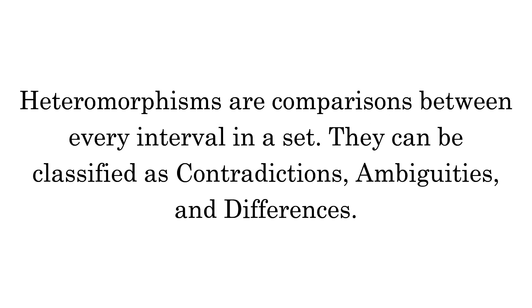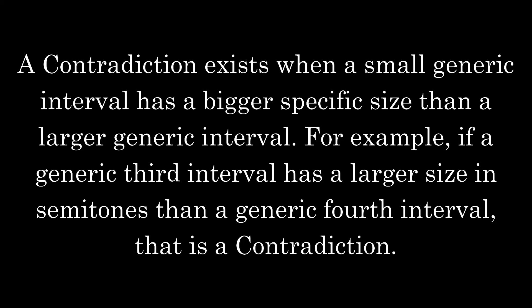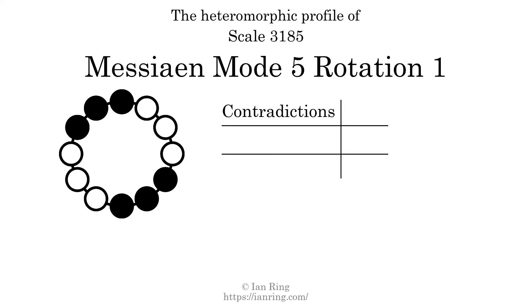Heteromorphisms are comparisons between every interval in a set. They can be classified as contradictions, ambiguities, and differences. A contradiction exists when a small generic interval has a bigger specific size than a larger generic interval. For example, if a generic third interval has a larger size in semitones than a generic fourth interval, that is a contradiction. The number of contradictions in this scale is 8.